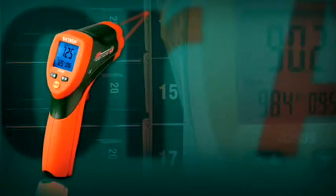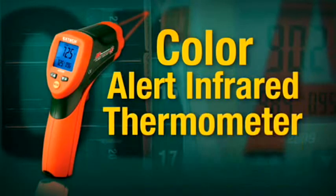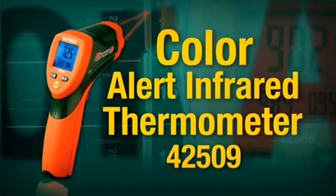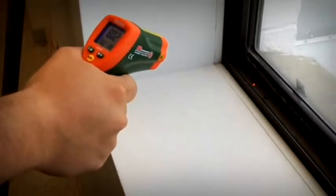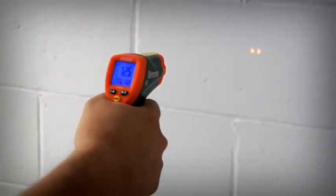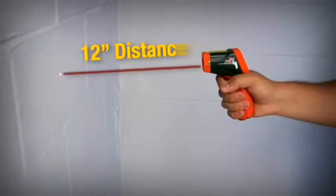Introducing X-TEC's new ColorAlert Infrared Thermometer, model 42509. The fast-responding IR thermometer features two laser pointers to help users quickly identify a 1-inch measurement area from a safe 12-inch distance.